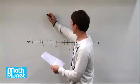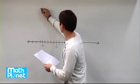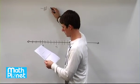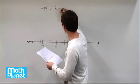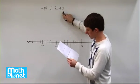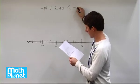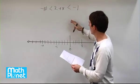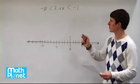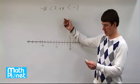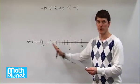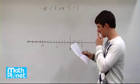We have this inequality here: negative 10 is less than 2 plus x, and that quantity is less than negative 1. We want to graph this. To do that we need to simplify it a little bit, and then we can see where it lies on this number line — that's all we're doing.